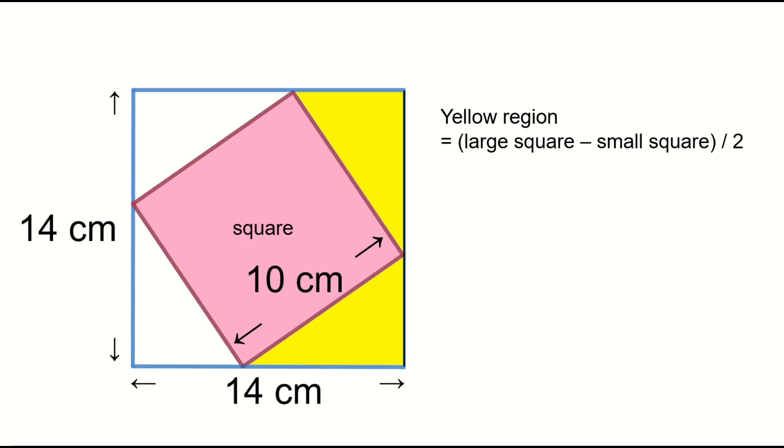The yellow area can be calculated by subtracting the area of the smaller square from the area of the larger square and dividing the result by 2.